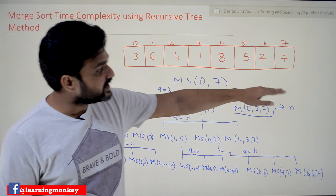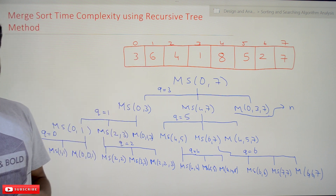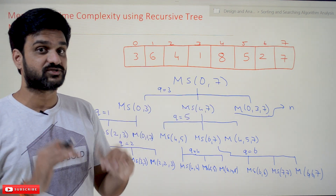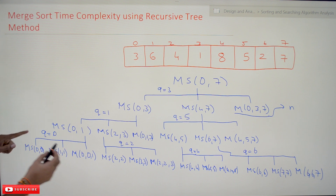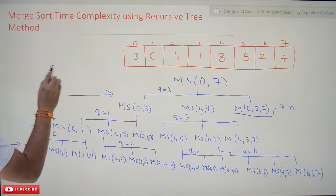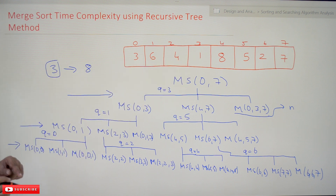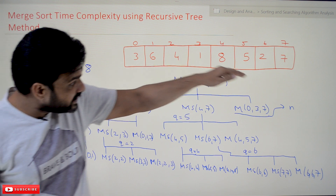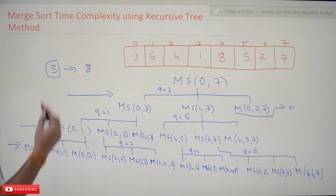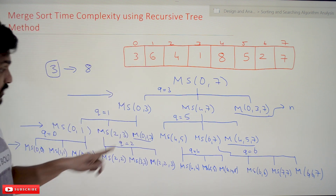Every time we call a merge function, n number of comparisons are done. The key point is: how many such merge function calls are made, and how many elements are being sorted by those merge function calls? For example, looking at the levels — there are three levels obtained for eight elements. At each level, how many elements are getting sorted? In this level, n number of elements are getting sorted. Looking at the next level, there are two merge function calls.